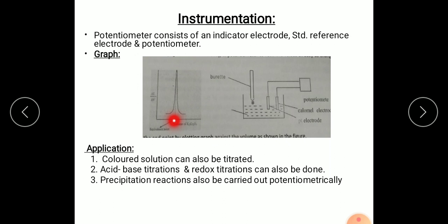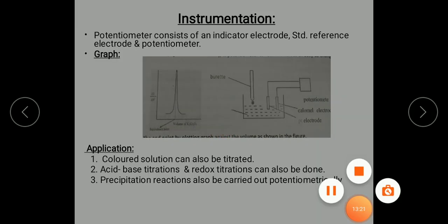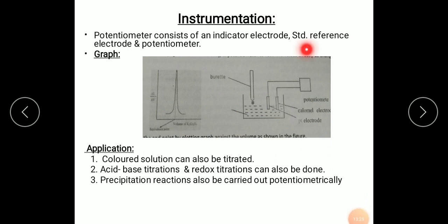These two give you a graph and this peak point gives you the equivalence point which indicates the amount of volume of K2Cr2O7 required for conversion of Fe plus 2 to Fe plus 3. We have taken K2Cr2O7 and two electrodes, platinum electrode as indicator electrode and calomel electrode as reference electrode, connected to potentiometer which gives change in EMF. By this experiment we can study colored solutions, redox titrations, acid-base titrations, and precipitation reactions can also be carried out potentiometrically. This is all about potentiometric titration, thank you.